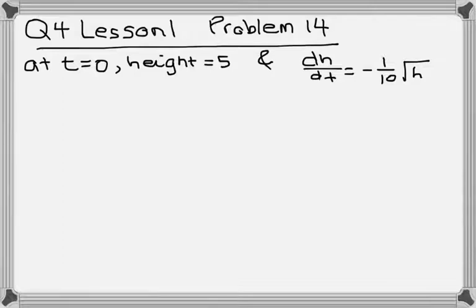So it starts out by separating variables. And in fact, this problem gave you that hint. It said, use separation of variables to find an expression for h. So the first thing you need to do is get all the h's on one side and all the t's on the other. Here, meaning that this root h needs to be on the other side, so you need to divide by root h. And this dt needs to be on the other side, so you need to multiply by dt to get rid of that.